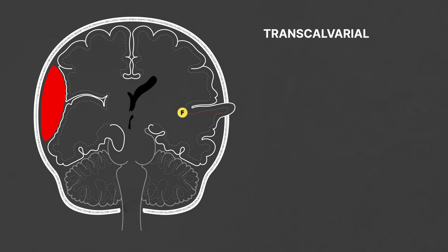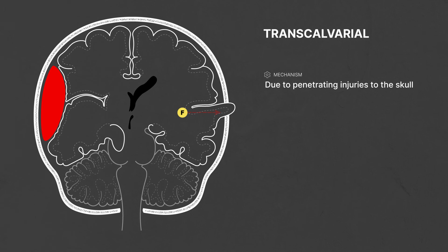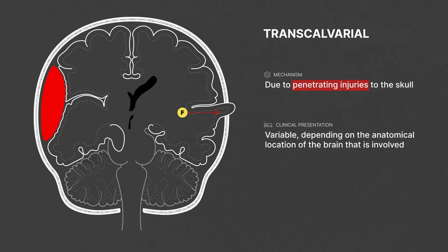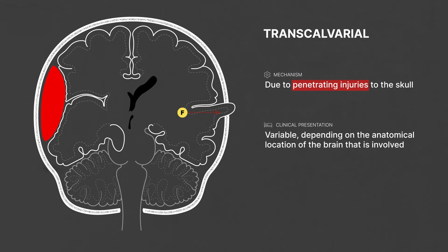And finally, there are transcalvarial herniations, which are the rarest of the bunch, and usually the result of penetrating injuries to the head and skull, which leave a defect or opening for herniation to occur. As a result of this mechanism, signs and symptoms can vary depending on whether or not the brain tissue was involved in the penetrating injury, and also the location of the brain that is involved.